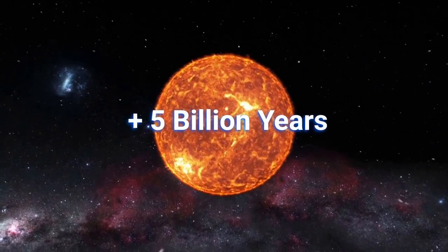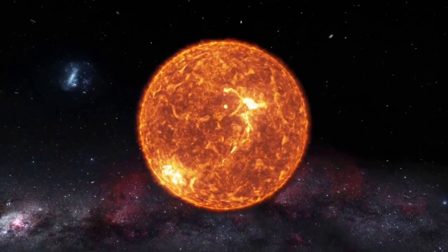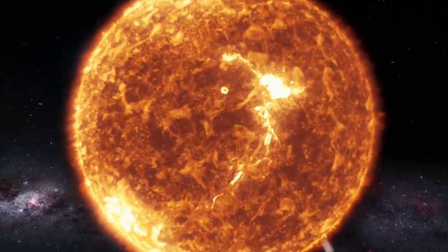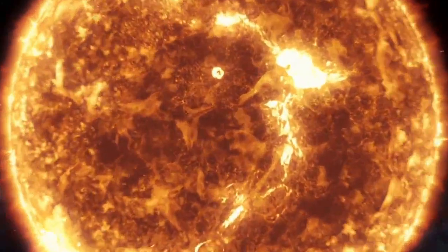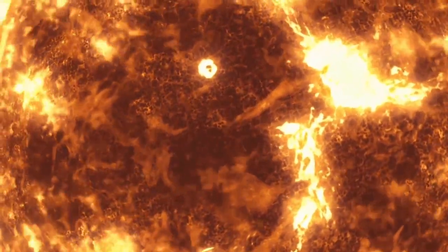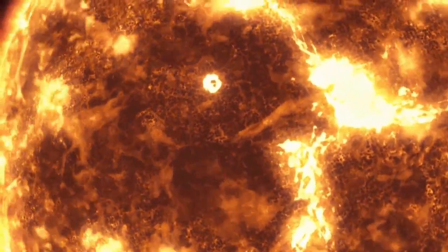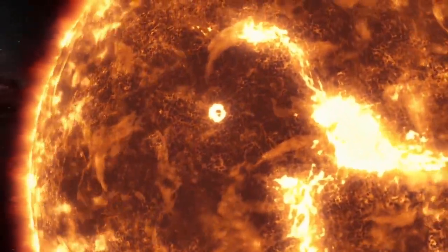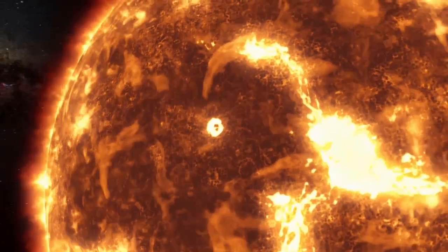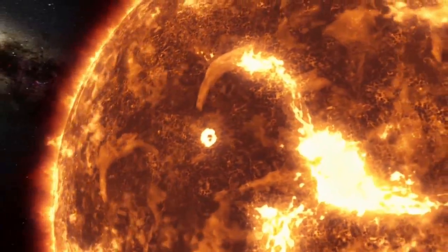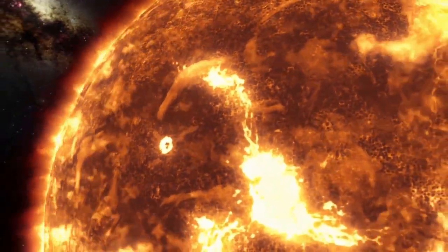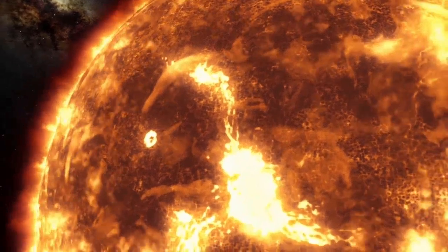After 5 billion years, our Sun will die. As the Sun exhausts its hydrogen fuel, it will begin to expand into a red giant, eventually swallowing the inner planets, including Earth. The outer planets will be subjected to increased radiation and gravitational forces, altering their orbits.